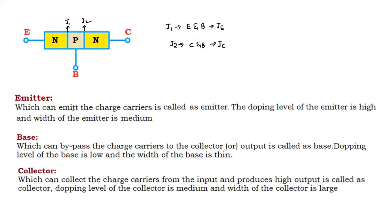The collector is the terminal which collects the charge carriers from the input and produces a high output. The doping level of the collector is medium, and the width of the collector is very large. So to summarize the widths: the collector width is large, the base width is very thin, and the emitter width is medium.